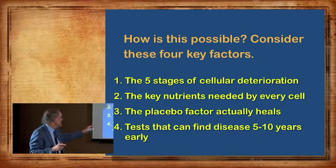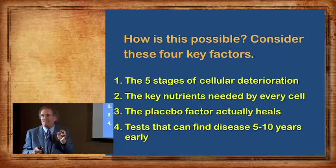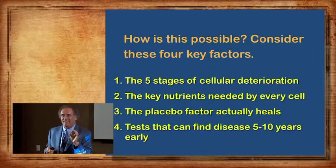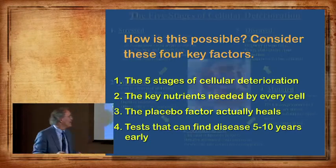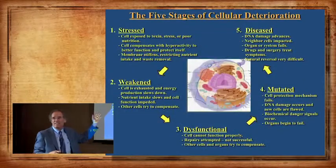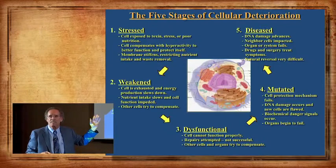We're going to talk about the tests that can find disease five to ten years earlier — this is the meat of it, the good stuff. This is a chart that explains the deterioration of a cell.